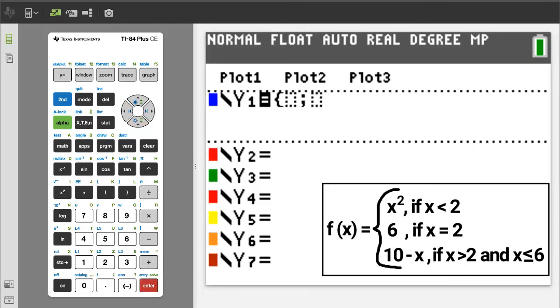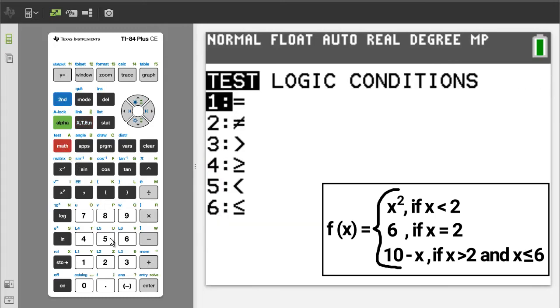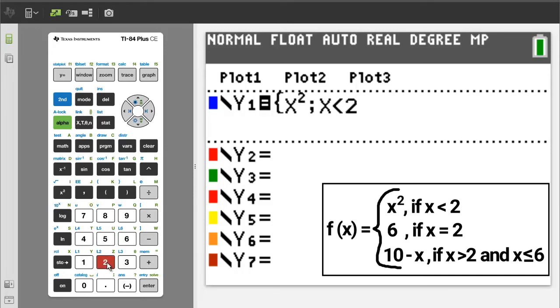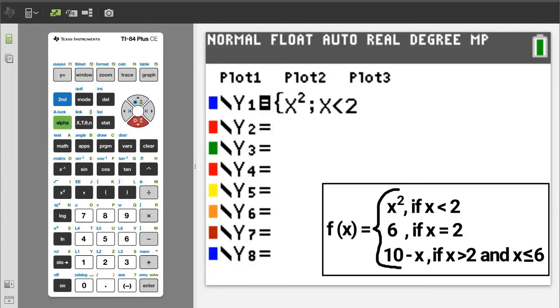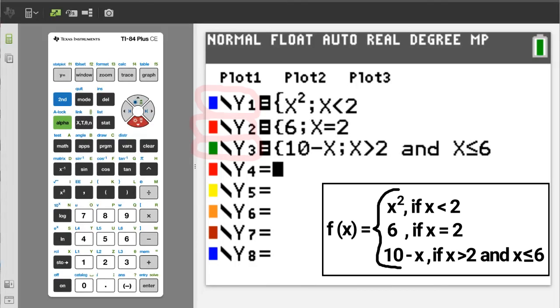In this box, enter x squared. Right arrow to the next box. Enter x is less than 2. Down arrow to y2. Here I will skip ahead with the y2 and y3 filled in with the other pieces. The advantage of this method is that each piece will have a different color on the graph. It will make it easier to associate the piece on the graph with the piece of the function. Press the graph button.